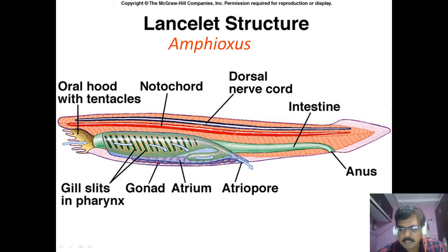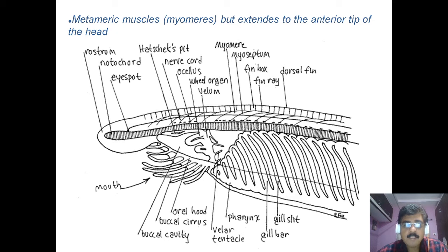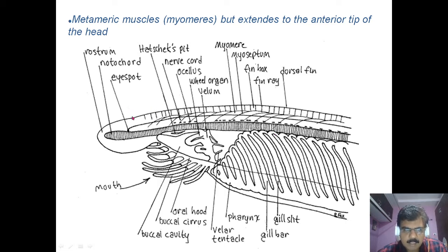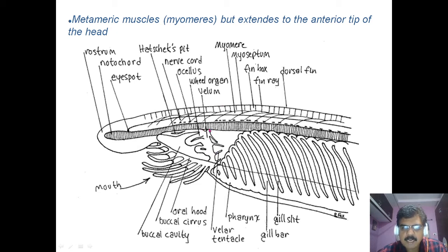The gonads are present on the ventral side. At the anterior end, which is the magnified view, the tapering end is called the rostrum. The notochord runs from the head region up to the tail region. At the anterior end there is a sensory organ called the eye spot, and along with the eye spot, ocelli are present throughout the length of the body.